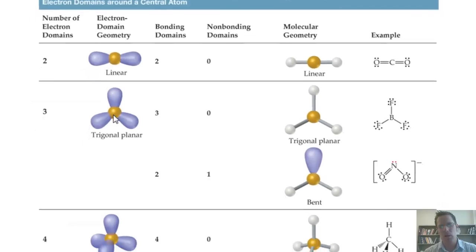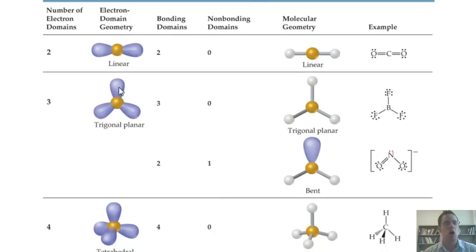However, if I had an example like this where one of these groups was a set of lone pairs, and the other two groups were other atoms, then the number of bonding domains would be two. The number of non-bonding domains, which once again is just the number of lone pair electrons, is one. And the overall molecular geometry, that is, the geometry in which we don't count the lone pairs, would be bent. An example of this is nitrogen dioxide, as shown here. I have a set of lone pairs on that nitrogen. The rough angle between each of these groups, including lone pairs, is around 120 or close to it. But the overall molecular geometry is bent.